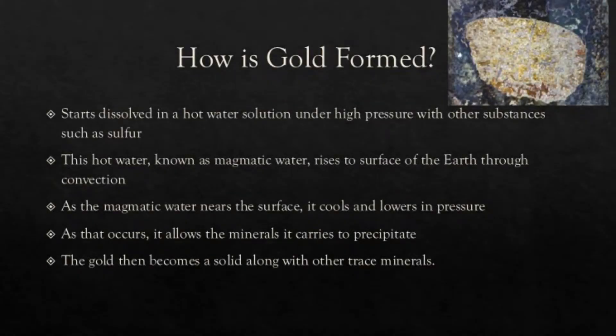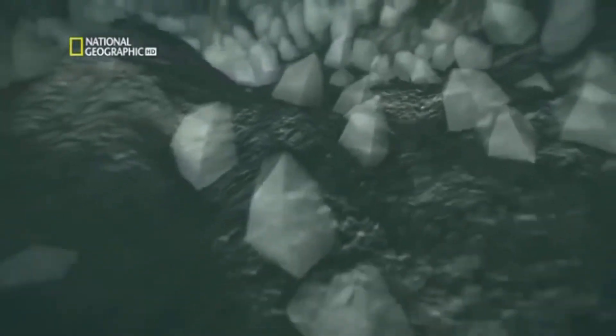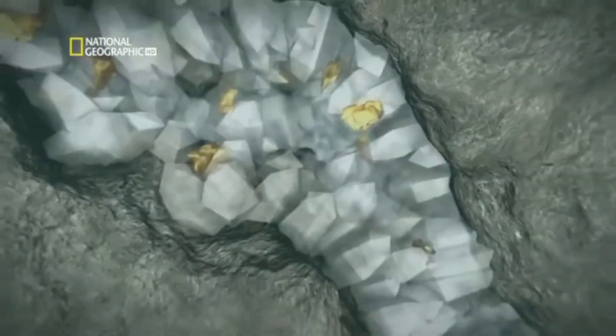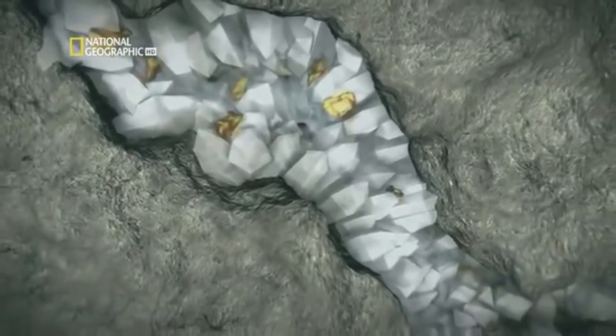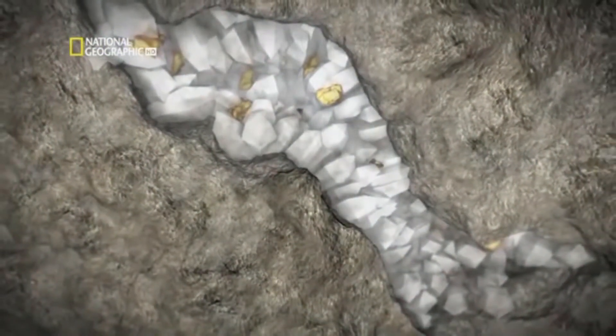Moving on, we probably want to know how gold is formed. Gold starts dissolved in a hot water solution under high pressure with other substances such as sulfur. This hot water, known as magmatic water, rises to the surface of the earth through convection. As the magmatic water nears the surface it cools and lowers in pressure, which allows the minerals it carries to precipitate. The gold then becomes a solid along with other trace minerals within the water.